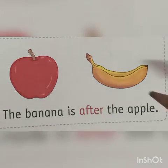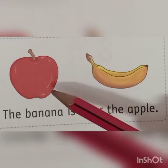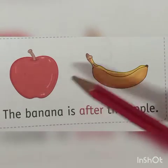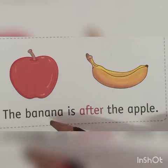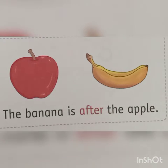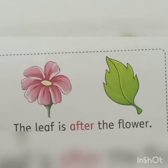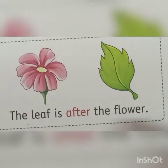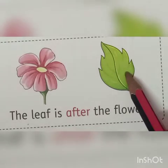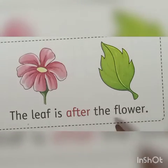Banana — what is after? After is highlighted with red color. So the banana is after the apple. The next picture you can see: the leaf is after the flower.